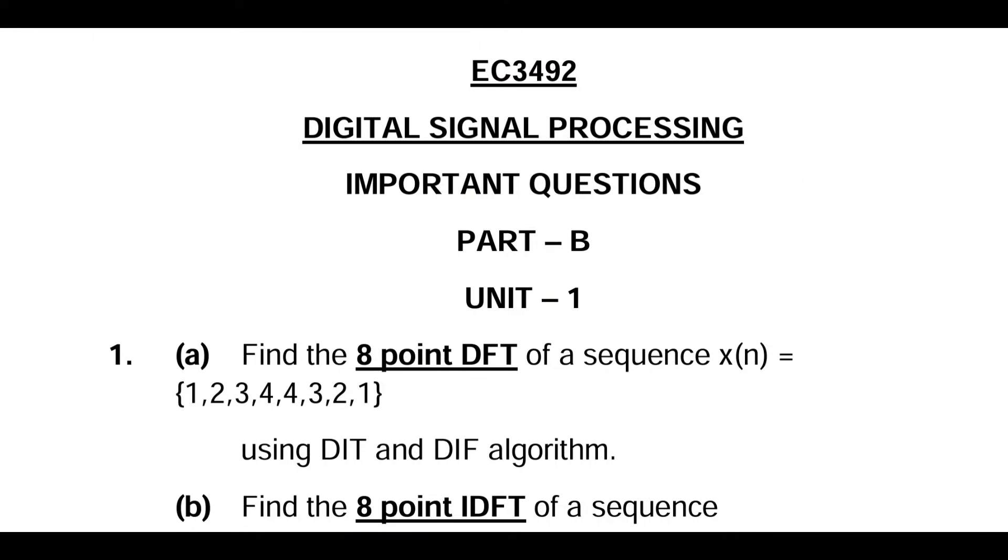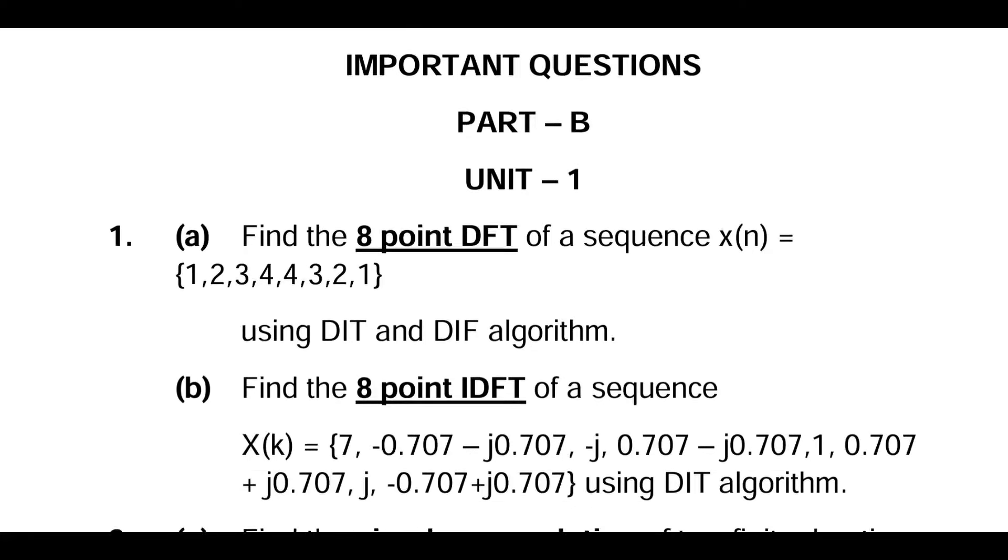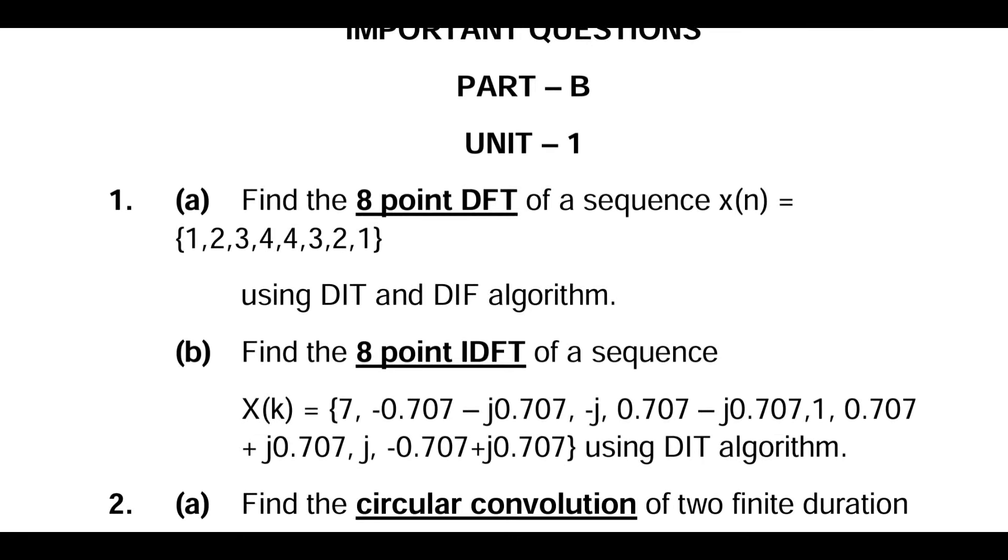E3492 Digital Signal Processing important questions, Part B, Unit 1. First question: Find the 8-point DFT of the sequence x(n) = {1, 2, 3, 4, 4, 3, 2, 1} using DIT and